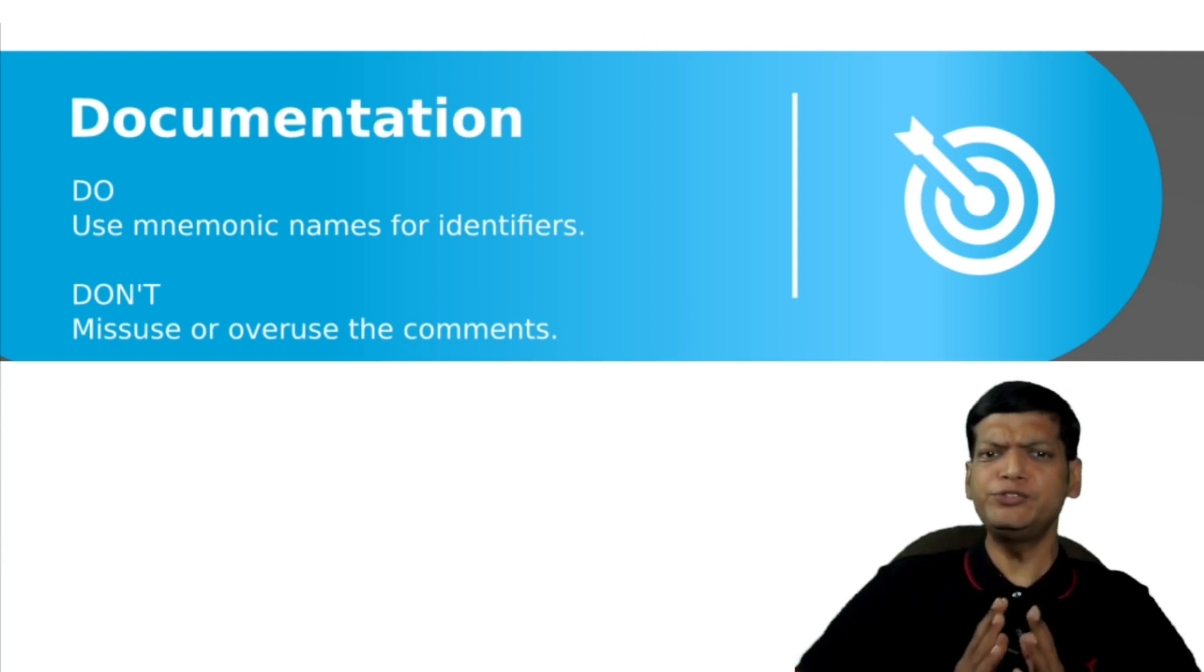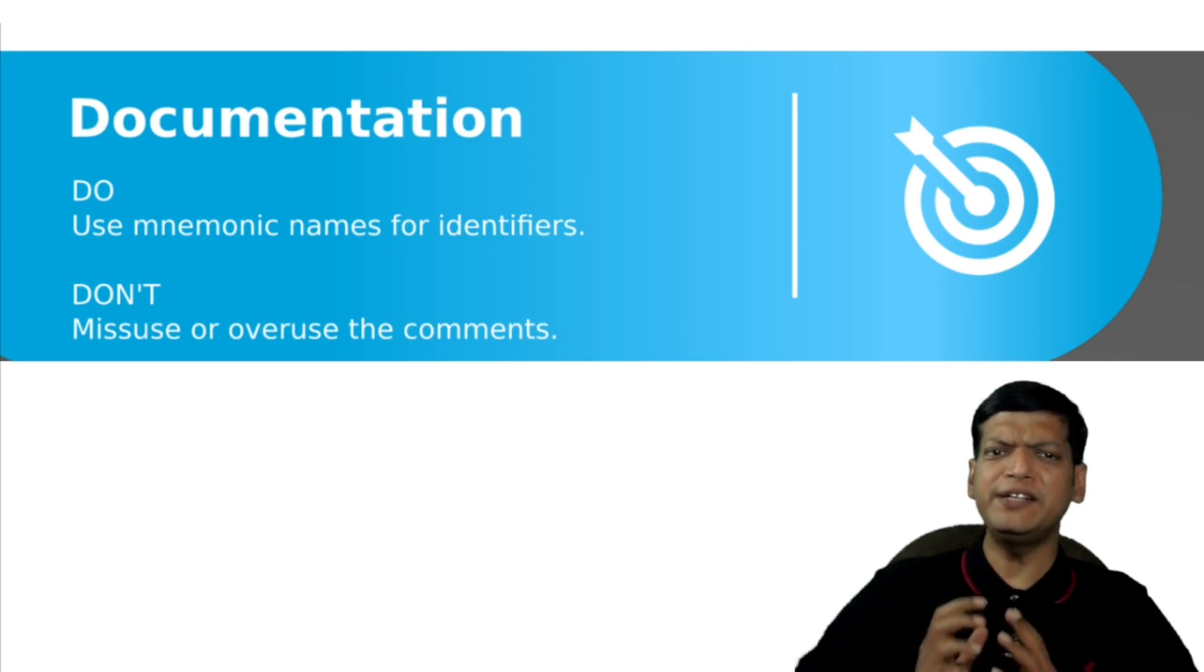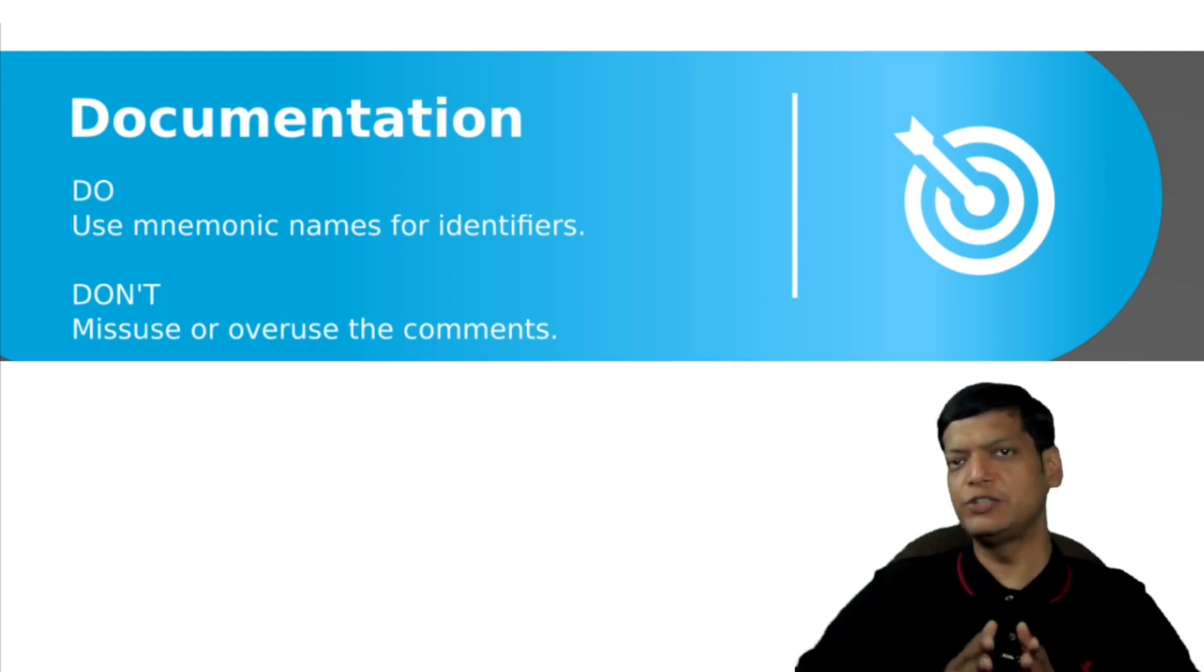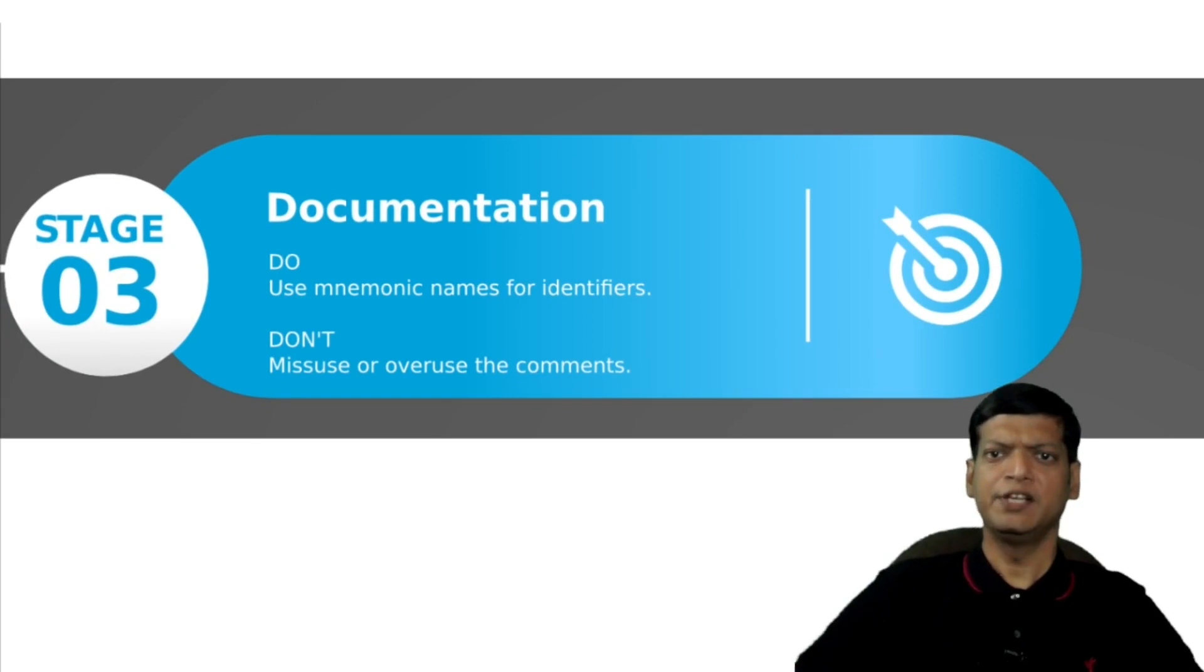You are supposed to comment important segments of the code, but do not overuse the comments and avoid the temptation to code each and every line of the code. I've seen students commenting each closing braces also, which is definitely not required. The stage carries two marks and you should write the variable description as well.